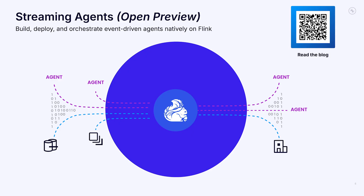Streaming agents come with everything you need out of the box, like native support for connecting to LLMs and embedding models, tool calling with MCP, vector search for retrieval augmented generation, external tables for joining non-Kafka data, built-in ML functions for anomaly detection and forecasting, and secure connections.